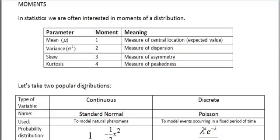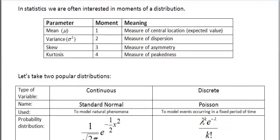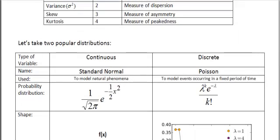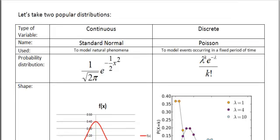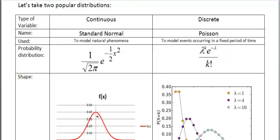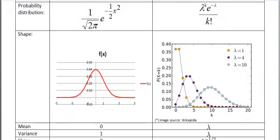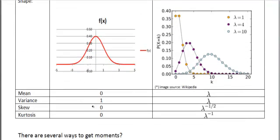So we have here two popular distribution functions. One is a continuous, one is a discrete random variable. Obviously you probably recognize the shape, this is a standard normal with this probability density function. Here we've got Poisson distribution with this probability mass function. And obviously, at the very bottom of this table, we are given mean, variance, skew and kurtosis, which are the four moments.